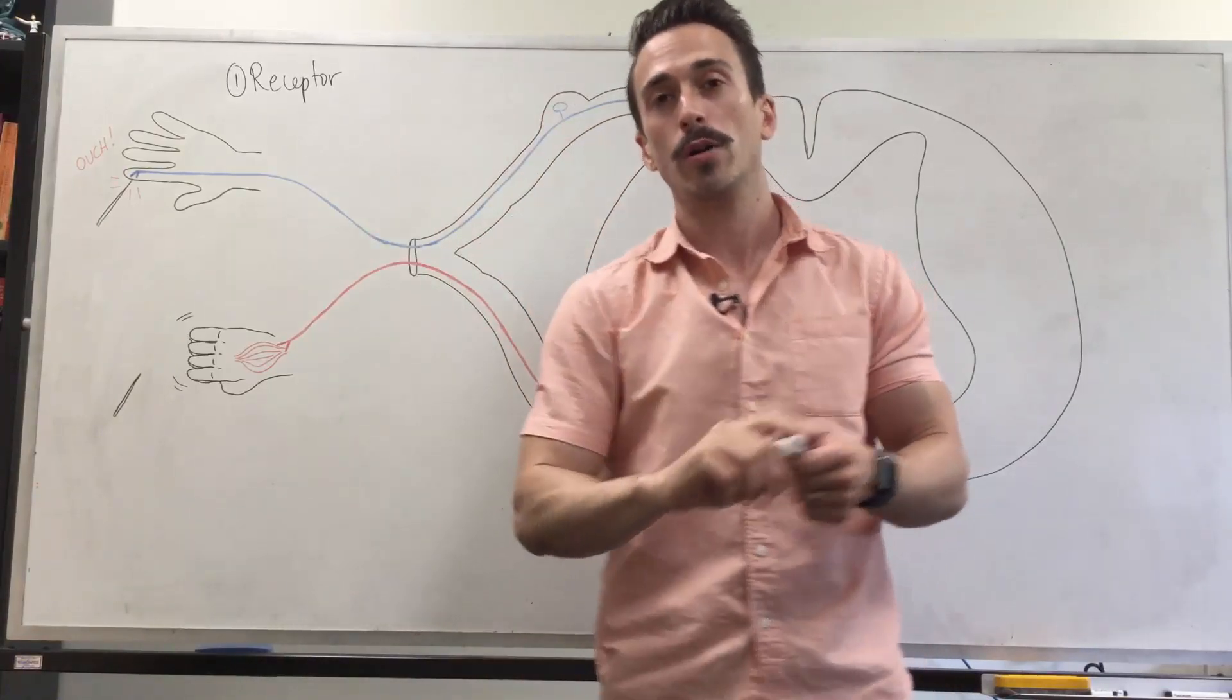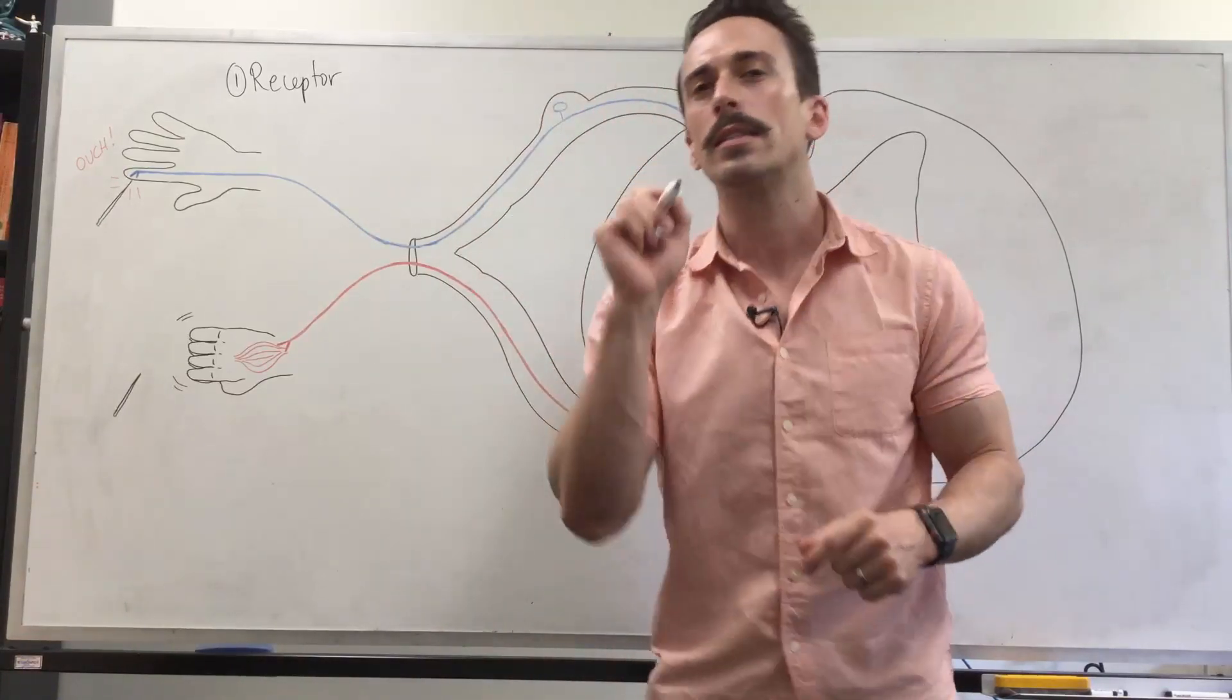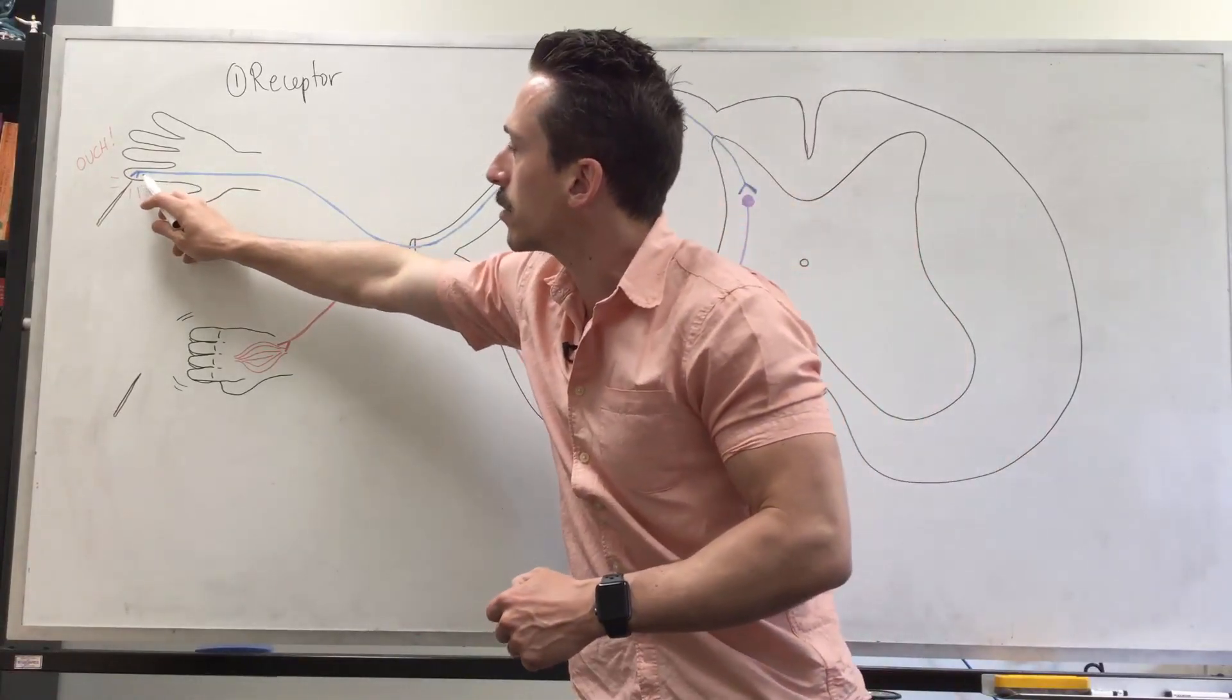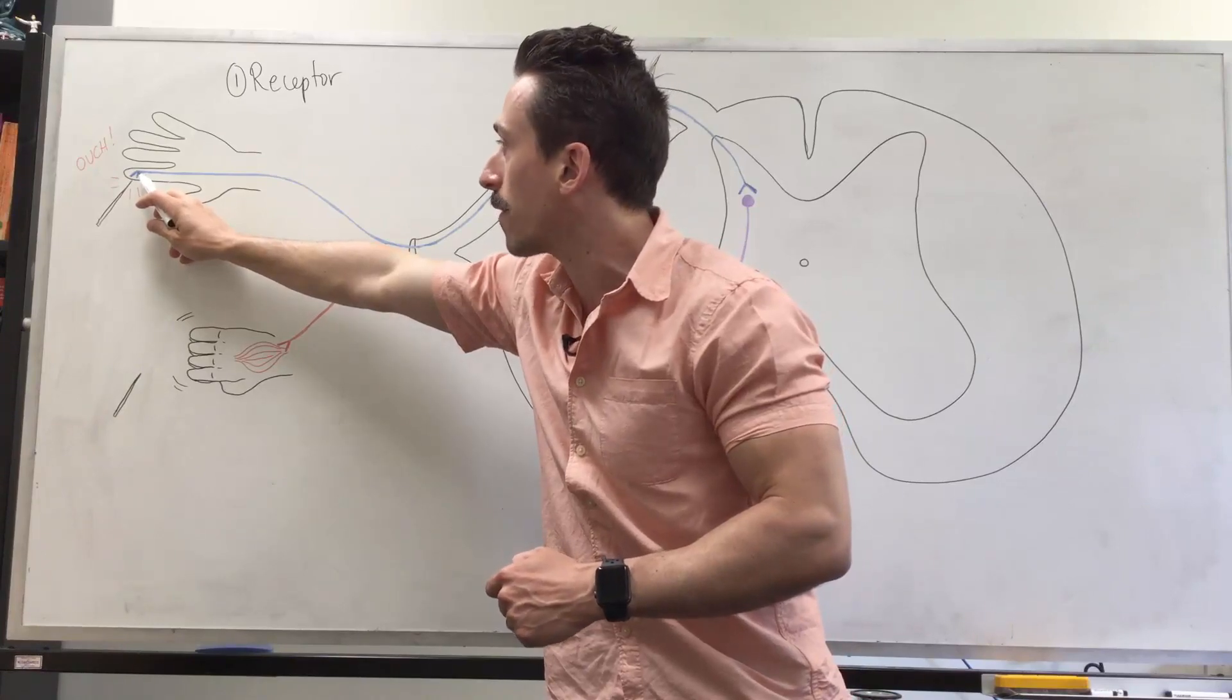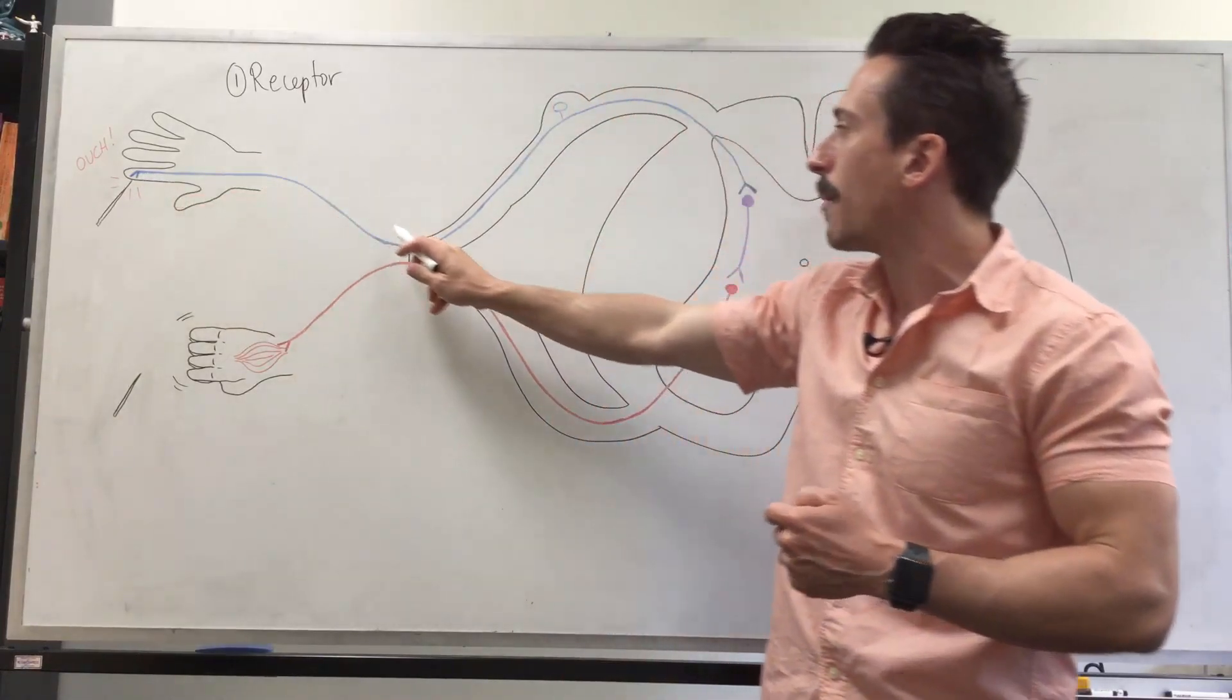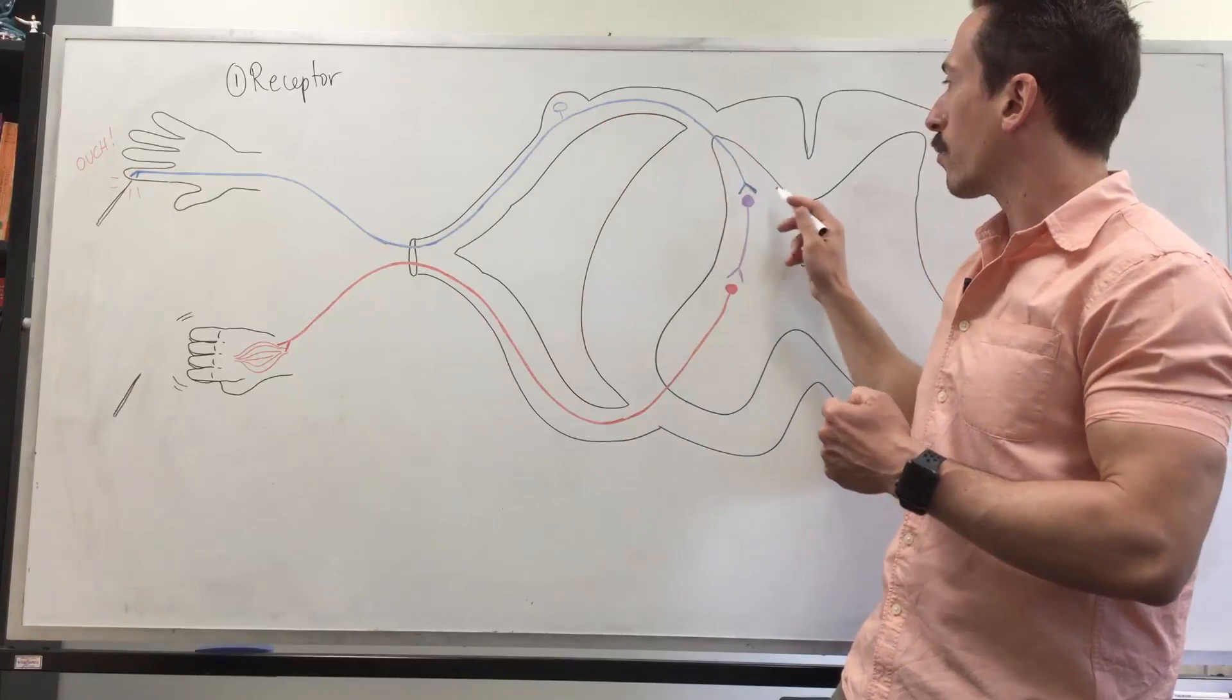The second component of a reflex arc is the sensory neuron. You can see that this sensory neuron goes from where the receptor is, down the arm, into the spinal cord right here. So the second component is the sensory neuron.